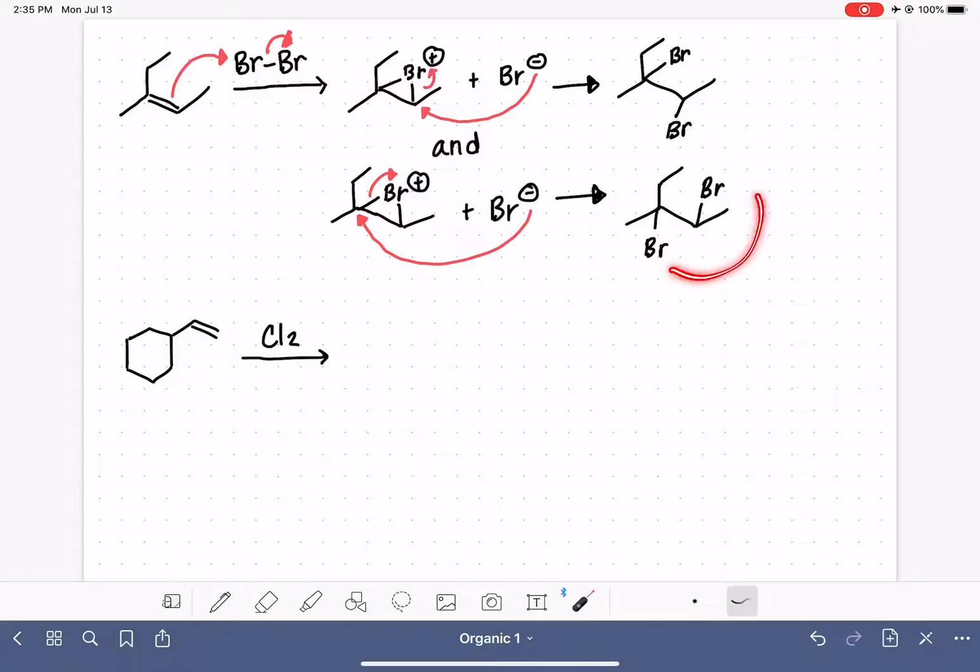Now, neither one of these products are actually showing stereochemistry appropriately. We have two chiral carbons in this molecule that were made in the course of this reaction, and we need to correctly show their stereochemistry. So let me show you again the trick that I prefer to use whenever I'm trying to not screw up stereochemistry in these types of reactions.